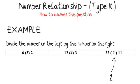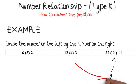12 divided by 3 equals 4. Now we know what the rule is. It is easy to find the missing number: 22 divided by 11 equals 2. So the missing number is 2. The answer is: 6(3)2, 12(4)3, 22(2)11.